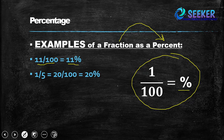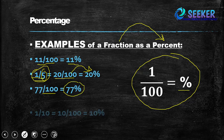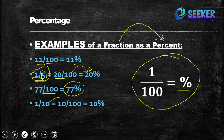Similarly, 1 by 5 equals 20 by 100, which comes out to be 20 percent. For this we multiply numerator and denominator by 20, so we get 20 divided by 100, which means 20 percent. Similarly, 77 divided by 100 is equal to 77 percent. And 1 by 10 equals 10 percent — we multiply by 10 to get 10 divided by 100, which is 10 percent.